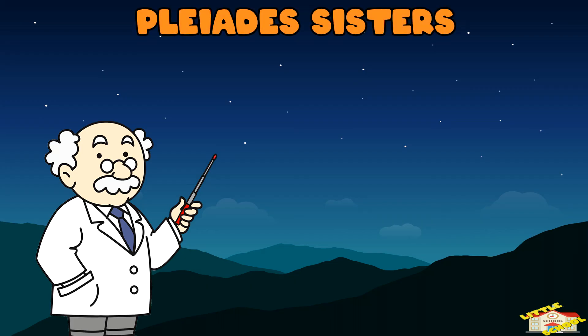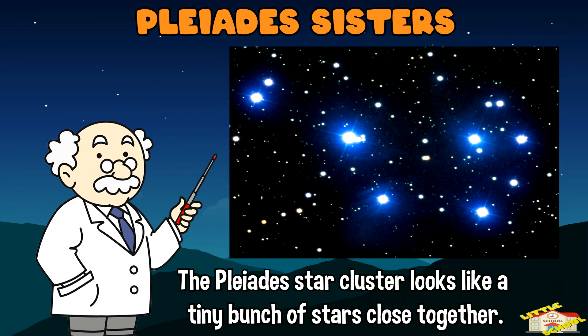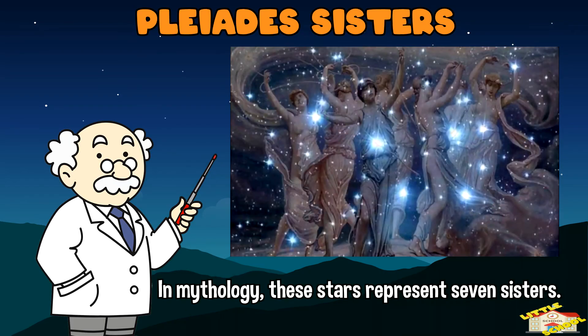Pleiades Sisters: the Pleiades star cluster looks like a tiny bunch of stars close together. In mythology, these stars represent seven sisters.